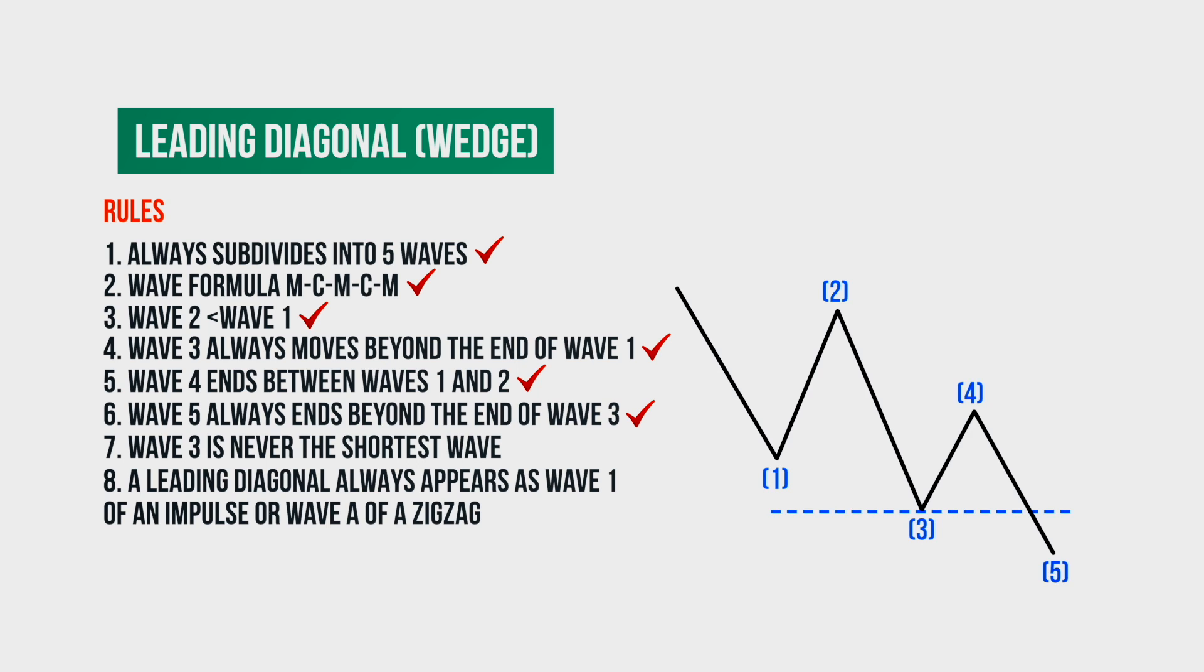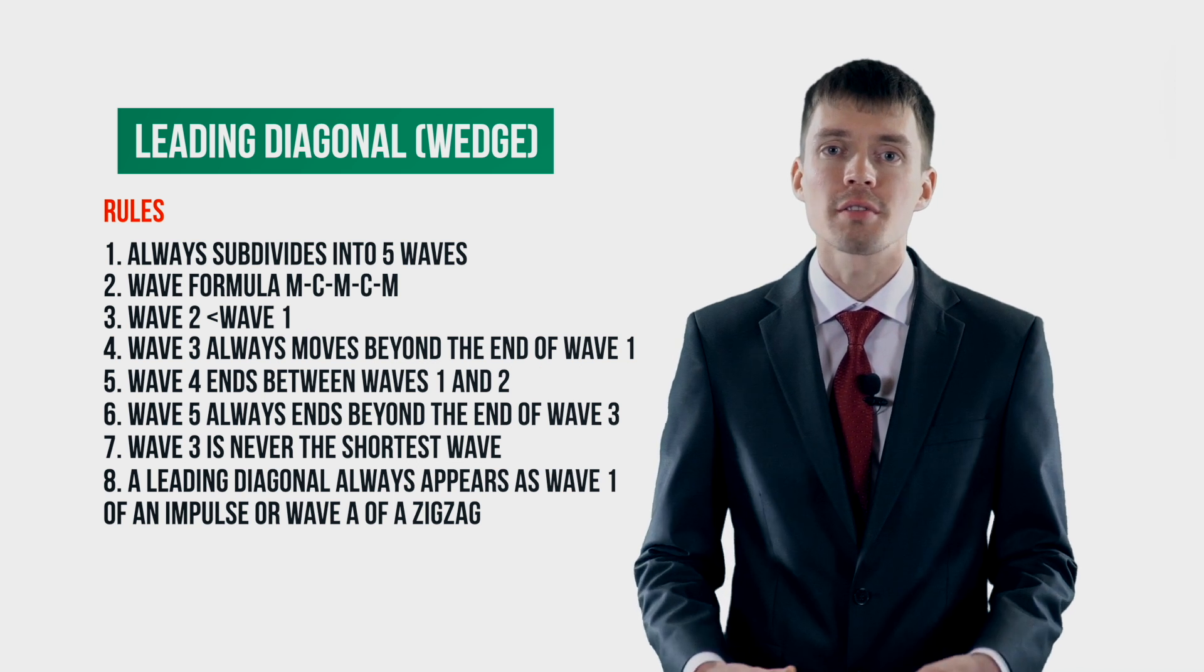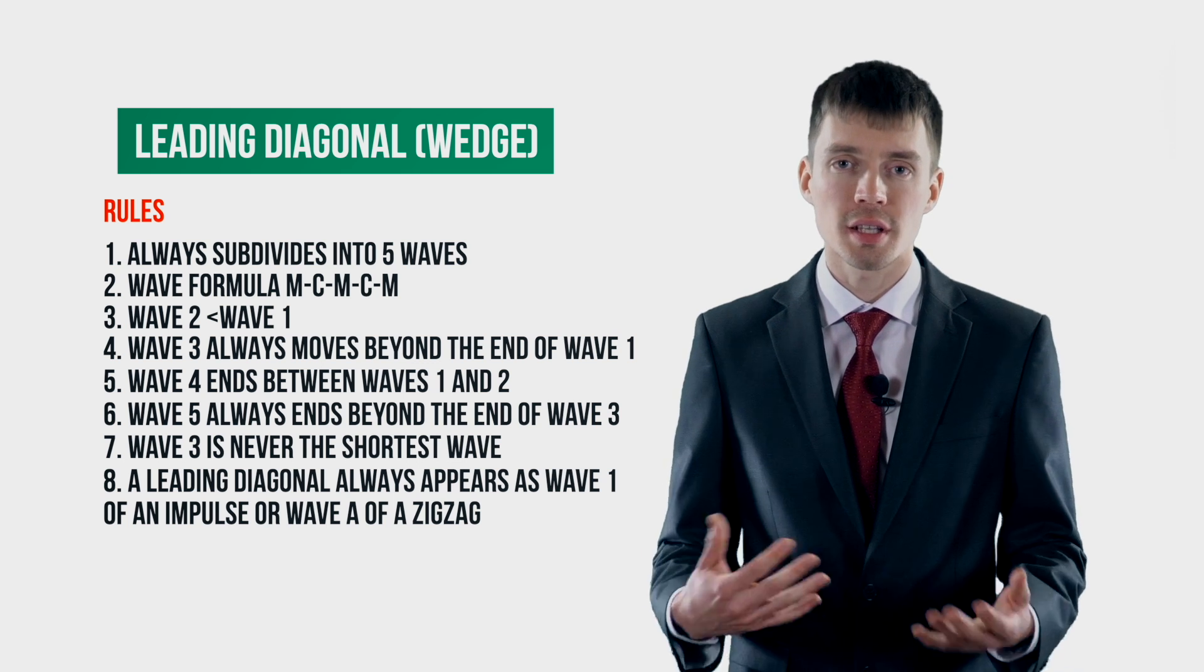The fifth wave of the leading diagonal always extends below the end of wave three and is never truncated. As for the third wave of the descending leading diagonal, it is never the shortest in comparison with waves one and five. As for the position, the leading diagonal always appears either in the place of wave one of the impulse or in the place of wave A of the zigzag. That is, the set of rules for the ascending and descending patterns are similar.